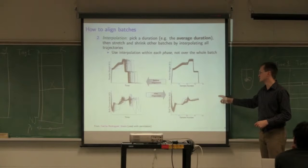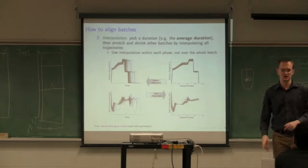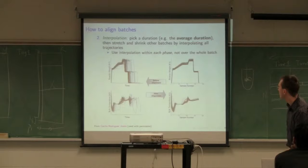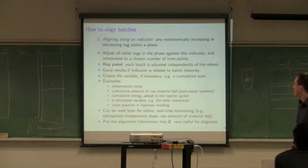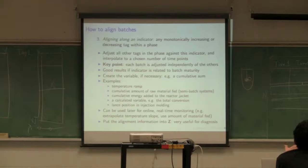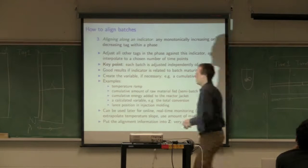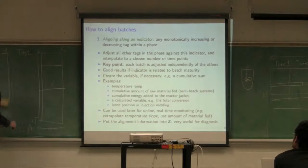Interpolation makes perfect sense. You basically pick a time point and say I want all of them to be over 100 samples. You stretch and shrink and resample the data, linearly interpolate to get 100 samples. I've never seen anyone use anything other than linear interpolation. Pick a duration then stretch and shrink within every phase. This is probably the most widely used form of alignment.